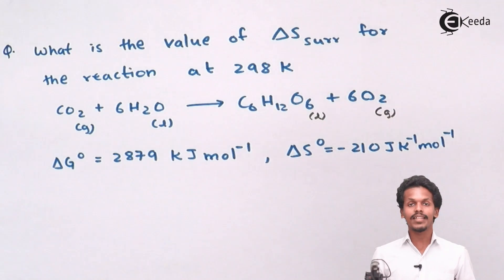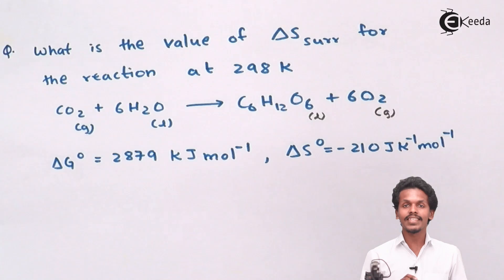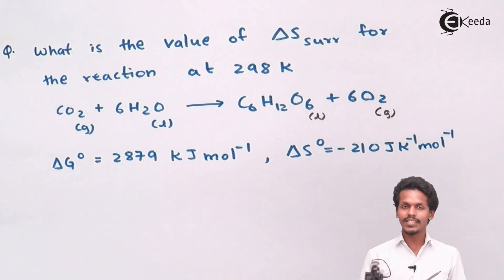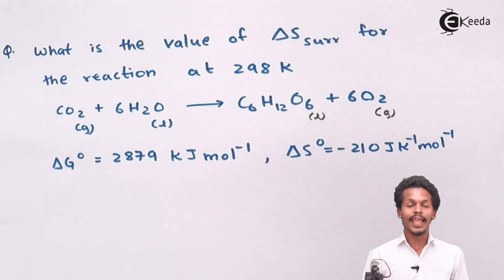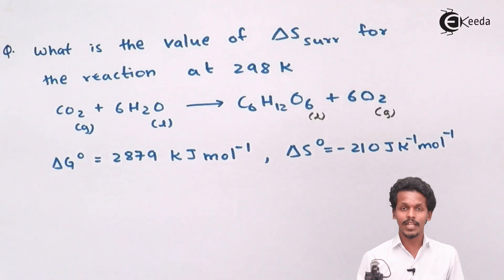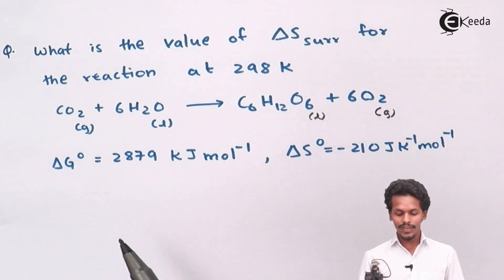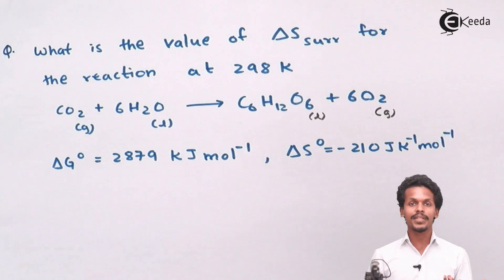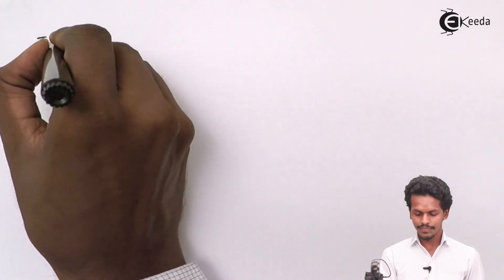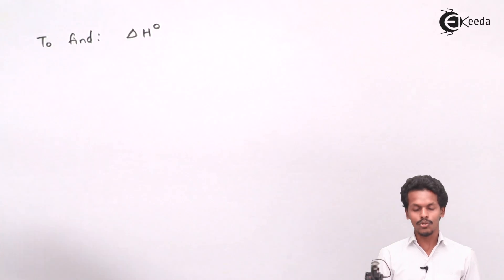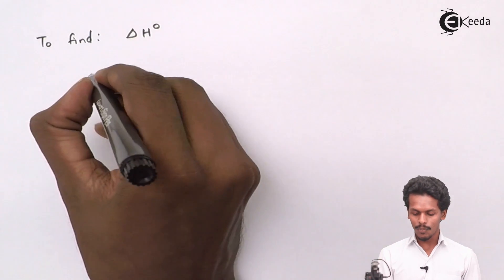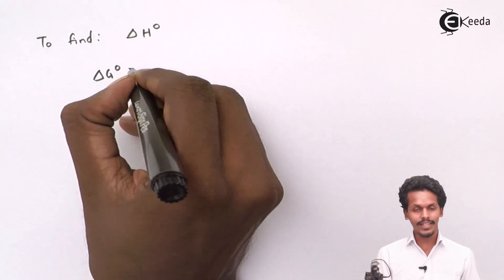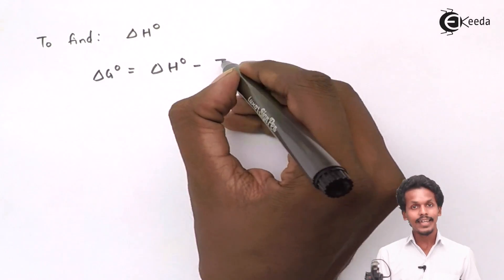To calculate delta S surrounding, we need its relationship with the change in enthalpy delta H and temperature. First, we will predict the value of the standard enthalpy change delta H⁰. We know that the formula for delta G⁰ is delta H⁰ minus T·delta S⁰.